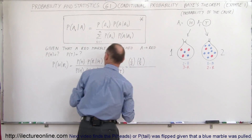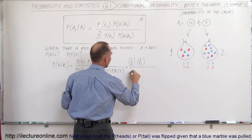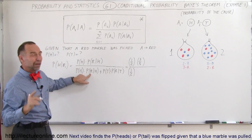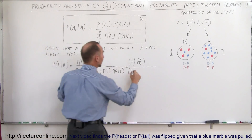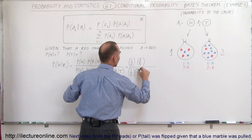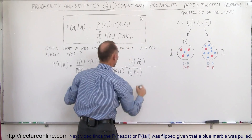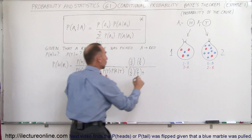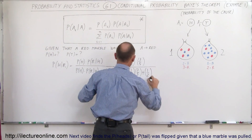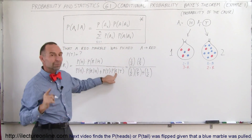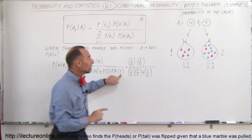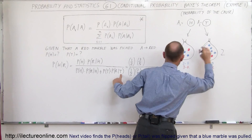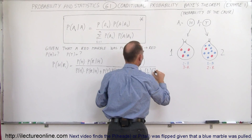We divide the whole thing by: the probability of heads, which is one-half, times the probability of pulling a red marble given heads — still three over five, because there are three red marbles out of five — plus the probability of tossing tails, which is one-half, times the probability of pulling a red marble given tails. That means we pulled from the right bag, which has two reds out of ten marbles, so times two out of ten.